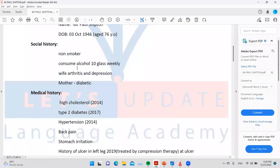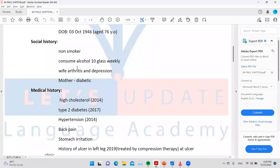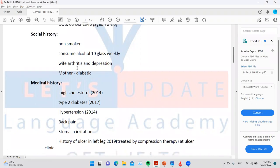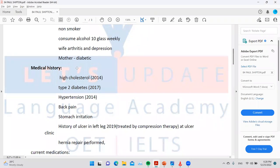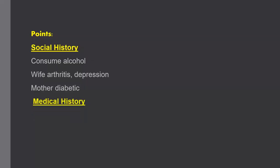For medical history: high cholesterol was diagnosed in 2014, type 2 diabetes in 2017, and hypertension in 2014 — we will take all three. Back pain, stomach irritation, history of ulceration in the left leg in 2019, and hernia repair are not needed. So from the medical history, we select high cholesterol in 2014, type 2 diabetes, and hypertension.